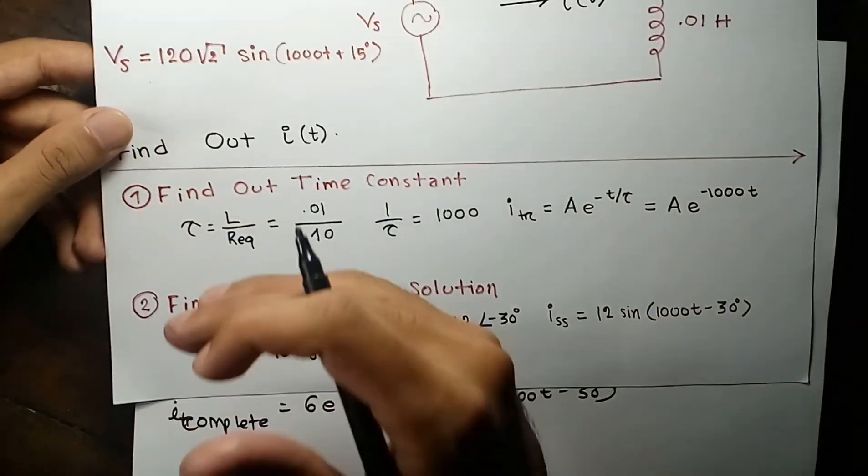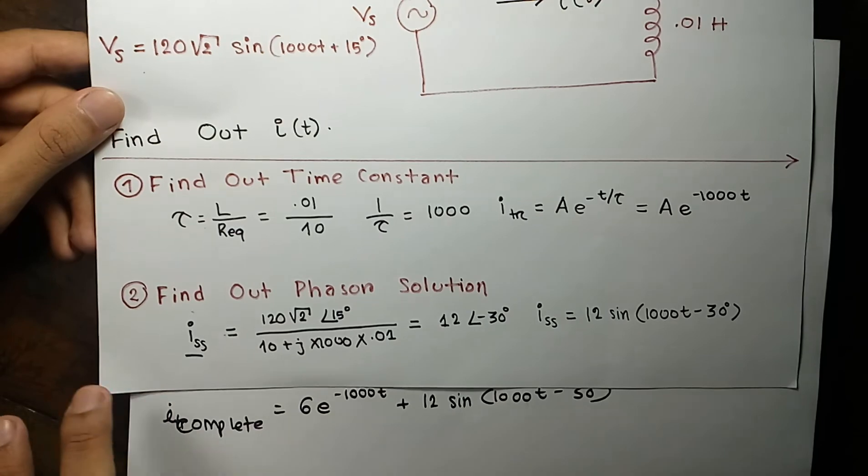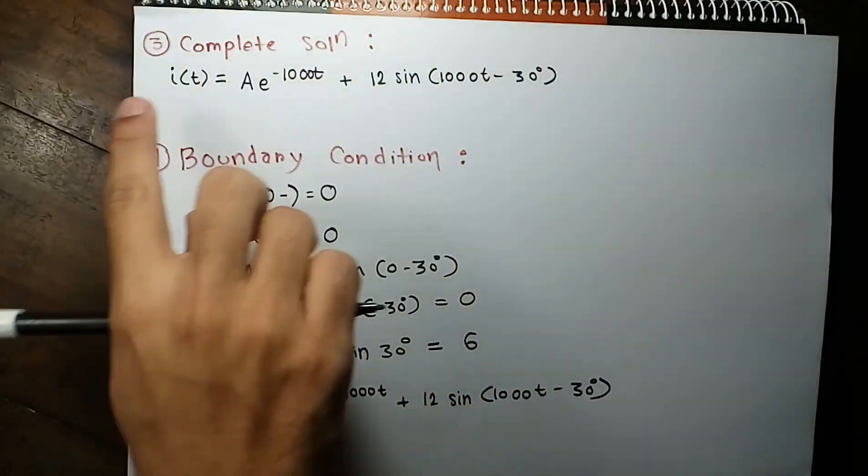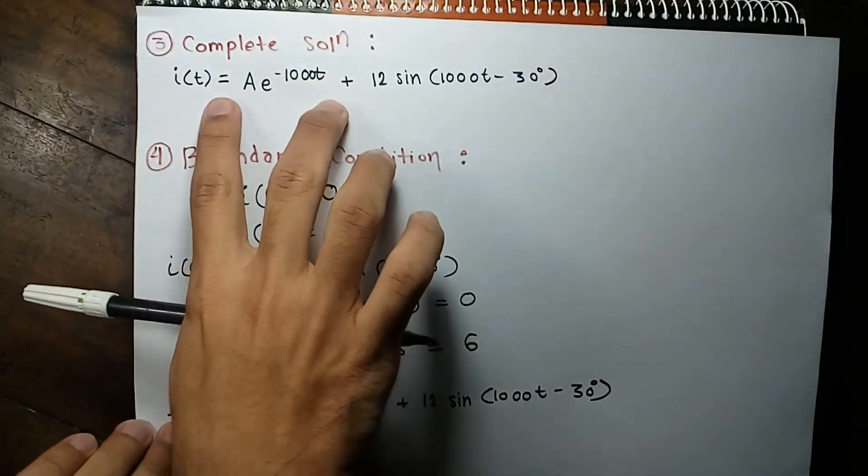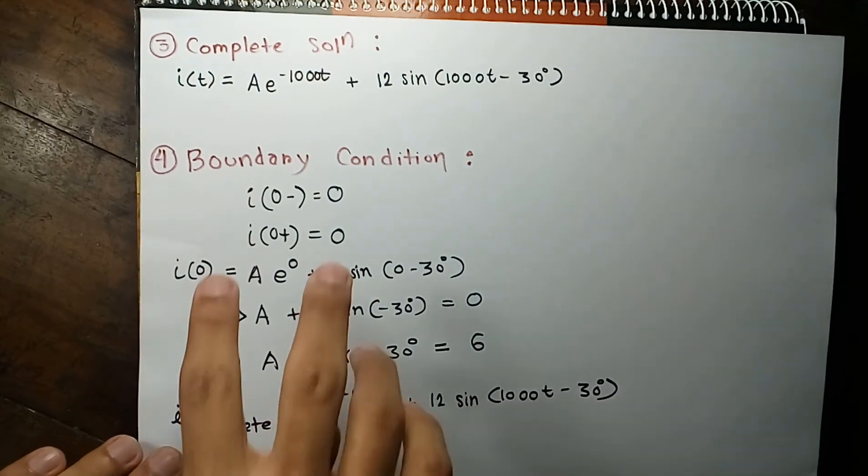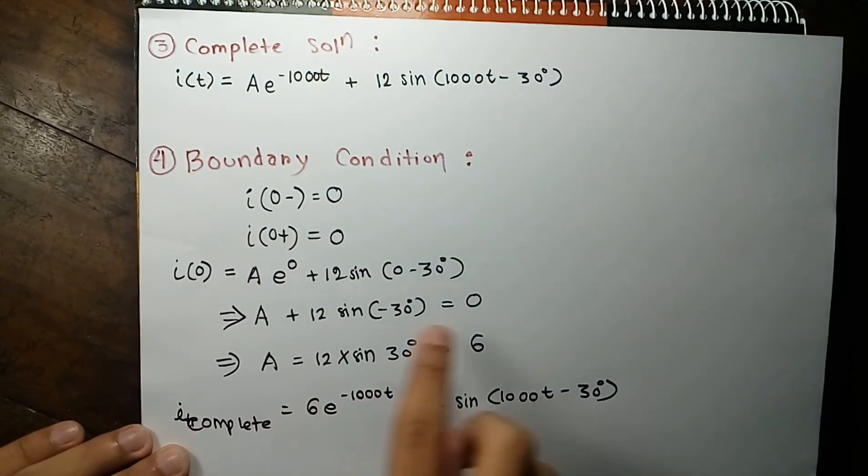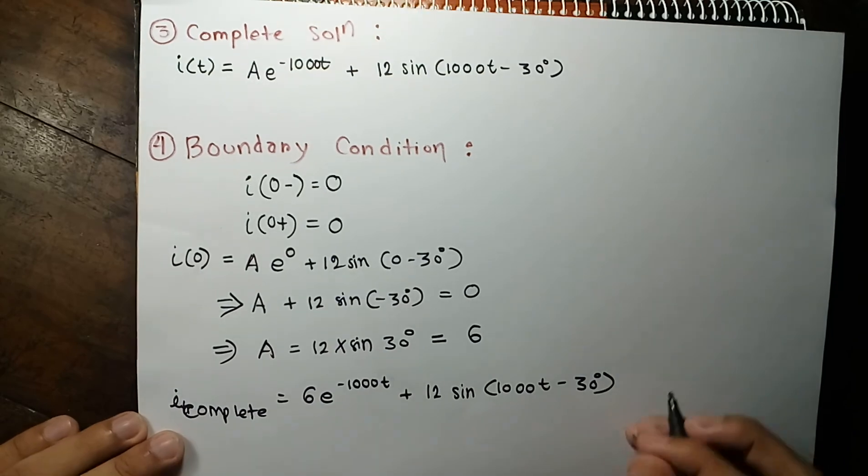See how systematically we have solved this problem. First find out time constant. Then find out the phasor solution. Then assign your complete solution as transient solution plus phasor solution. And then use boundary condition to find out the constant value. And that's the answer.